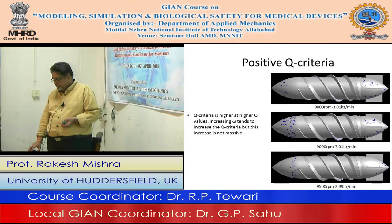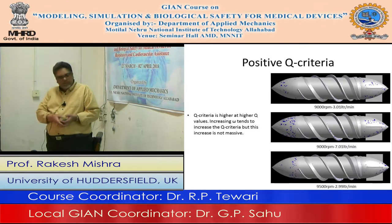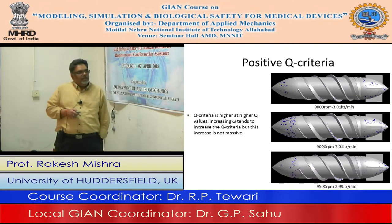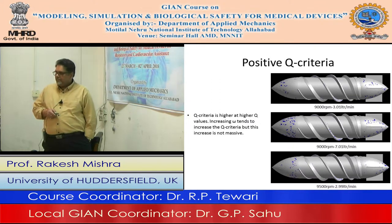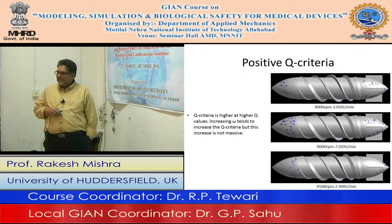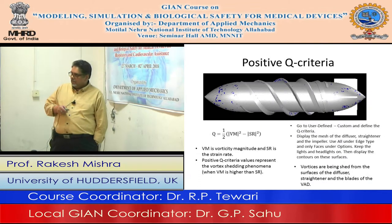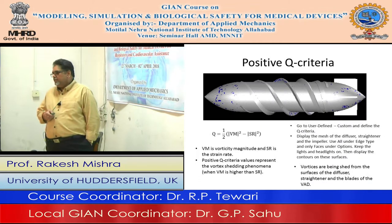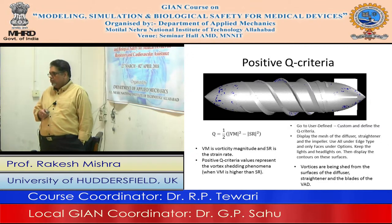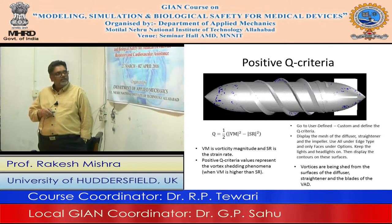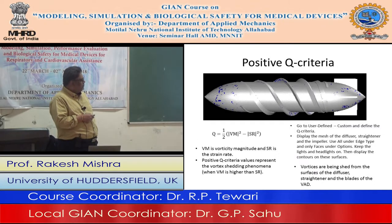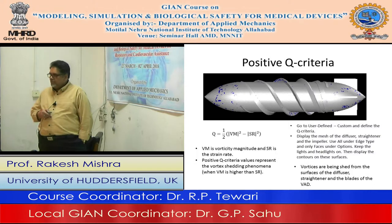This is vorticity magnitude squared minus the strain rate squared. If it is positive, it means that vorticity magnitude is higher than the strain rate, which means there is a propensity to create vortices more than the deformation from strain rate. Typically, positive Q values are used to indicate where vortices are being sheared.